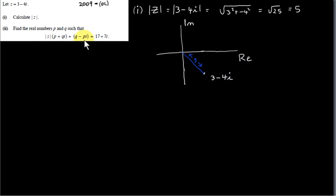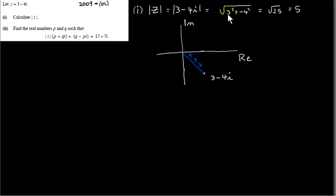Before we look at solving complex equations, I want to do the first part of this question, which is to get the modulus of 3 minus 4i. In the previous video, we looked at the modulus of a complex number. To get the modulus of 3 minus 4i, we get the square root of the sum of the squares of the real and imaginary parts. The real part is 3, the imaginary part is minus 4. So the modulus is the square root of 3 squared plus minus 4 squared, which is the square root of 9 plus 16, or the square root of 25, which is 5.